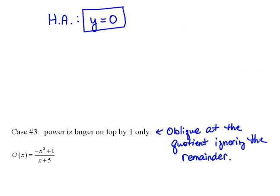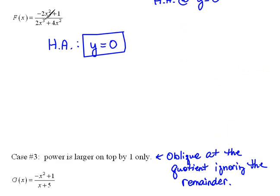We also talked about what happens if the highest power of x is larger on bottom. In that case, we always have a horizontal at y equals 0.